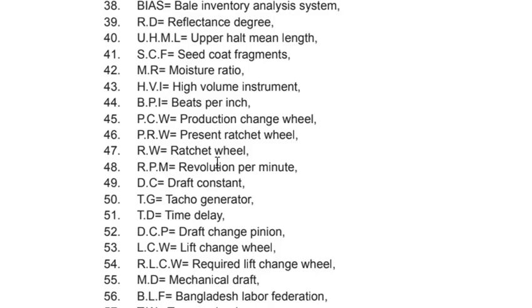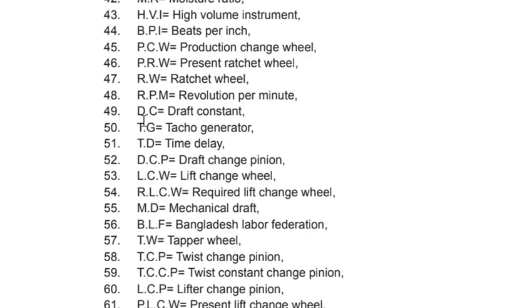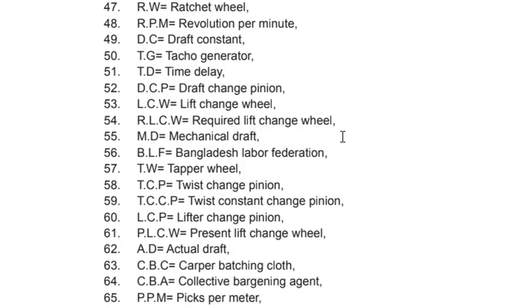Spinning abbreviations continued: RPM – Revolutions Per Minute; DC – Draft Constant; TG – Texture Generator; TD – Time Delay; DCP – Draft Chance Pinion; LCW – Lift Chance Wheel; RLCW – Required Lift Chance Wheel; MD – Mechanical Draft.